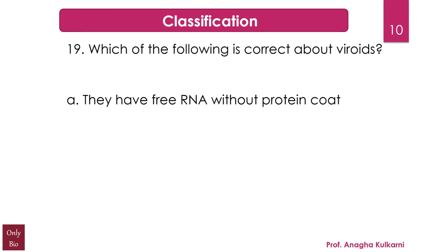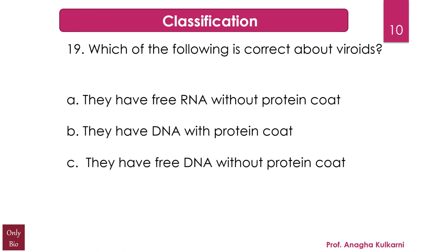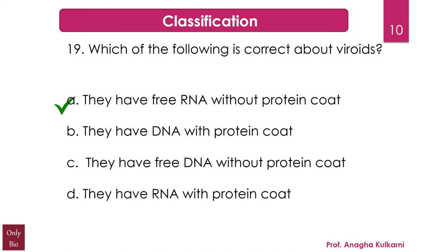The next question relates with the chapter Classification: which of the following is correct about viroids? Options: A) they have free RNA without protein coat, B) they have DNA with protein coat, C) they have free DNA without protein coat, D) they have RNA with protein coat. The correct answer is A. Viroids are the smallest infectious pathogens known, composed solely of a short strand of circular single-stranded RNA with no protein coating. All known viroids are inhabitants of higher plants and most cause diseases with varying economic importance.